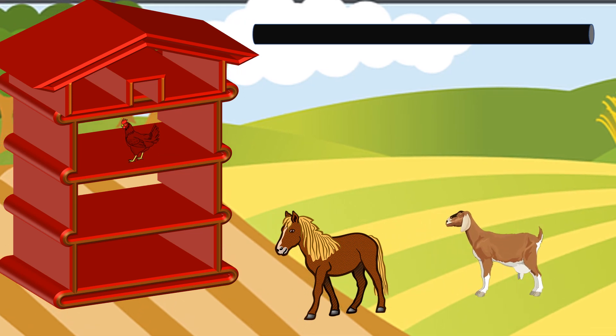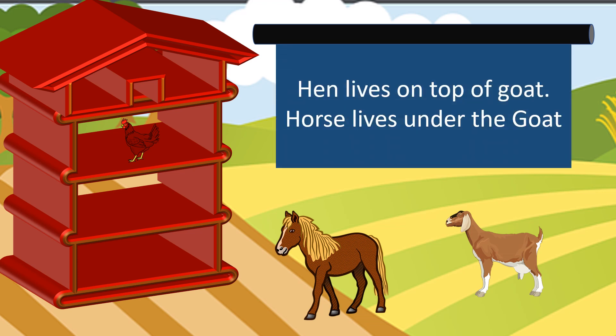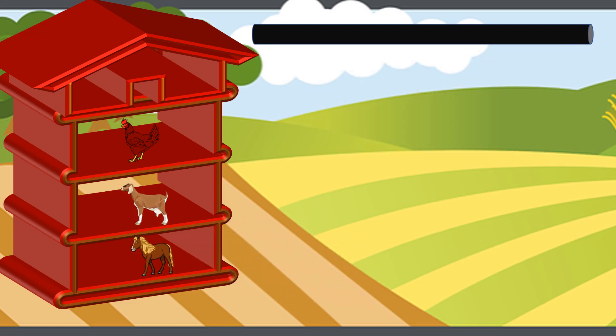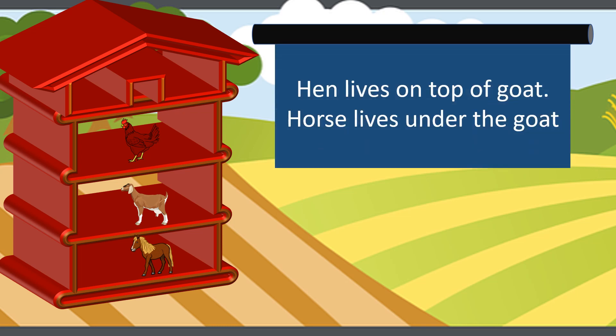So now I have to place the hen at the top of the house. Let's check: hen lives on top of goat. Now you can see the first sentence is correct — hen lives on top of goat. As per the second sentence, horse lives under the goat. Now when we check the two sentences again — hen lives on top of goat and horse lives under the goat — that's correct!